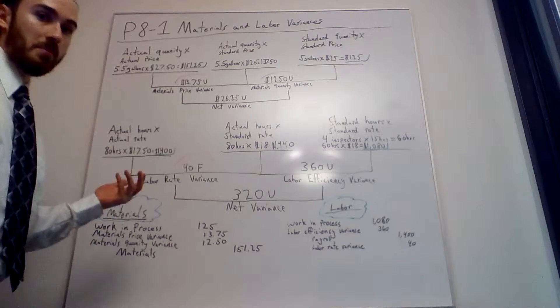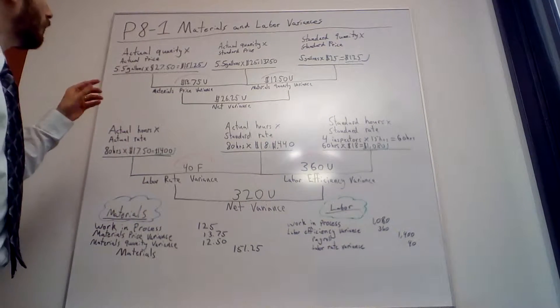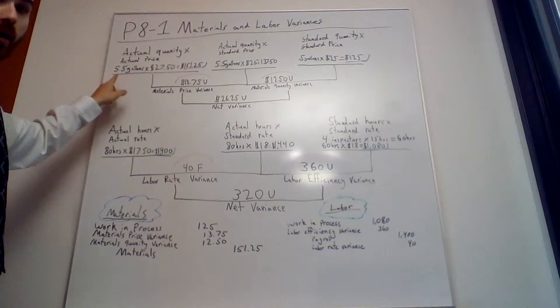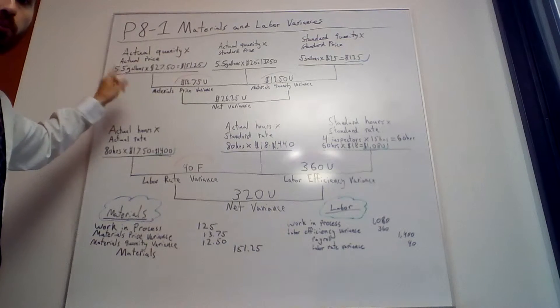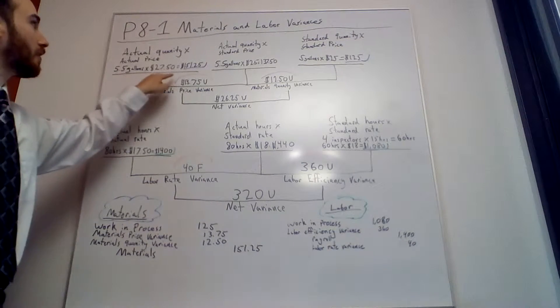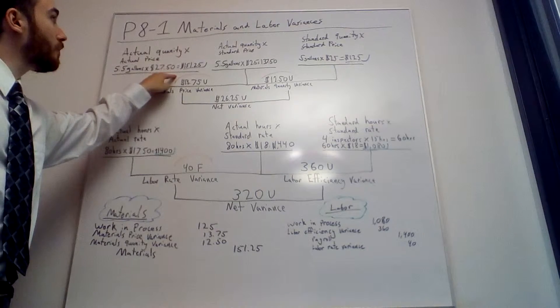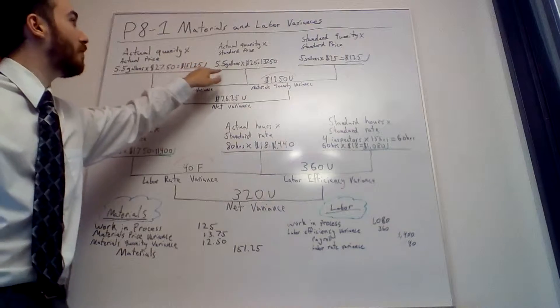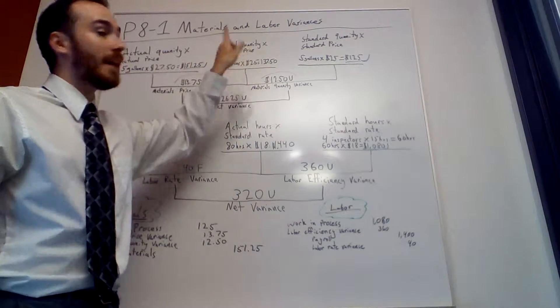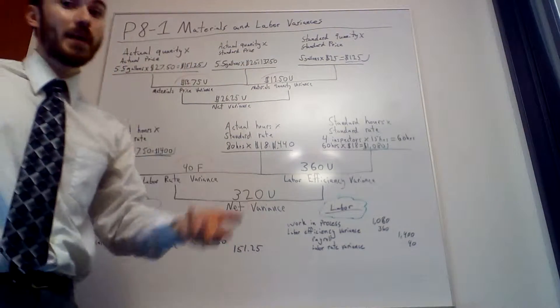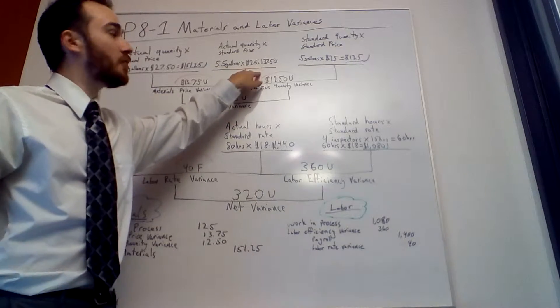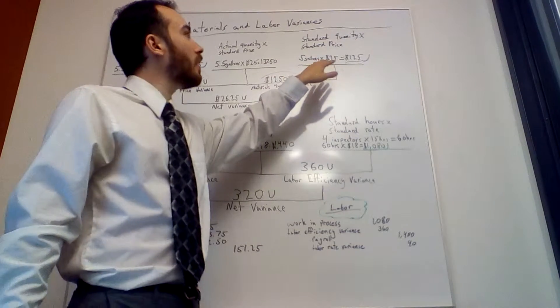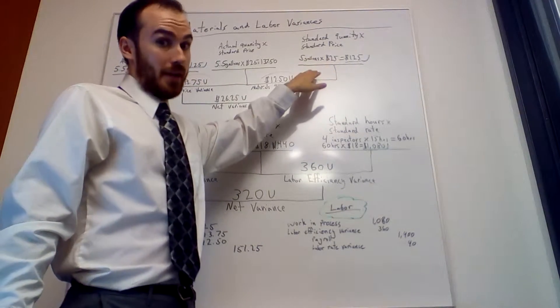For materials, on the left side you always do the actual quantity of materials times the actual price of materials, which gives us $151.25. That's actually what they spent on it. Then you take the actual quantity of materials, 5.5 gallons, times the standard price of $25, which gives us $137.50.